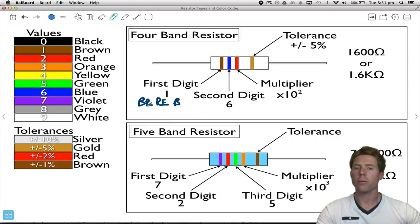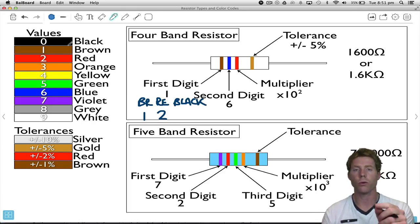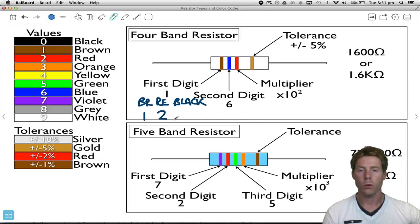What if we had brown, red, black? How much would that be? Well, brown is one, red is two, black is zero. So essentially we're saying put in zero zeros. Another way of saying that is put in no zeros, so just leave them out. It would be 12 ohms.